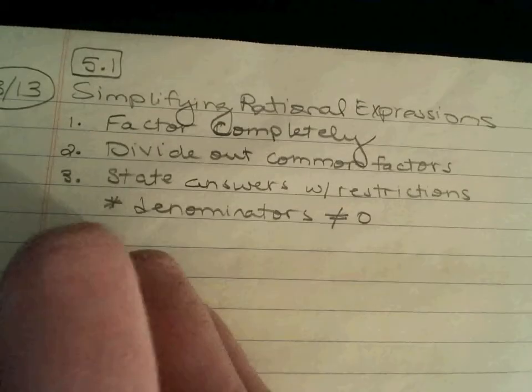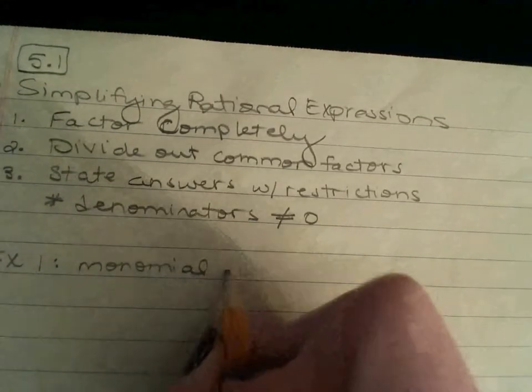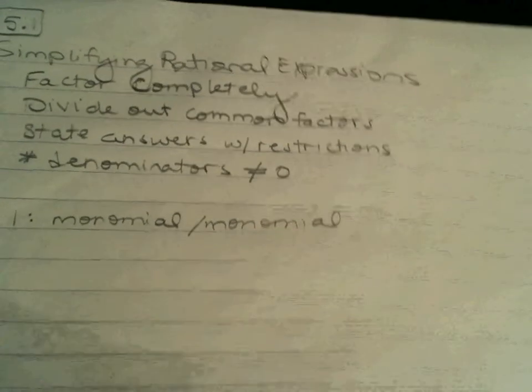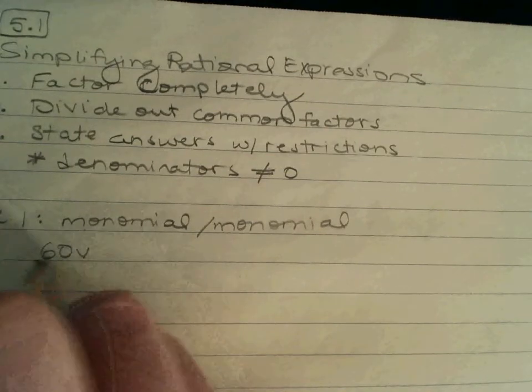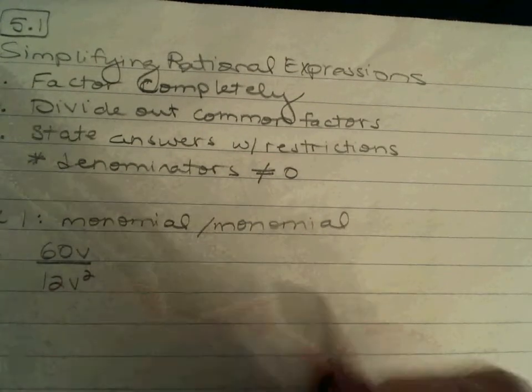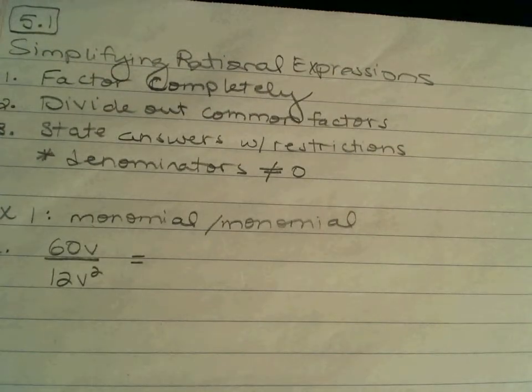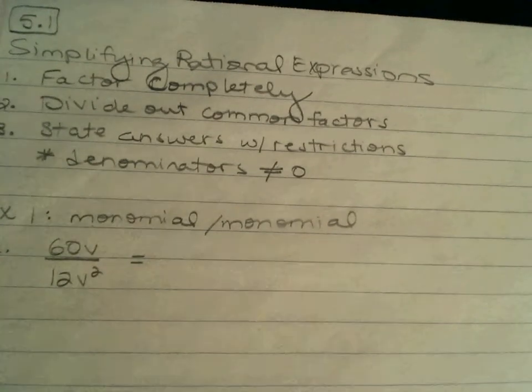Next, we're going to look at examples of three types. Example one is when we're kind of the simplest form is monomial divided by monomial. That's just one term over one term. So, 60V divided by 12V squared. We're going to start. Factor completely. There's no factoring in monomials. We're check on step one.